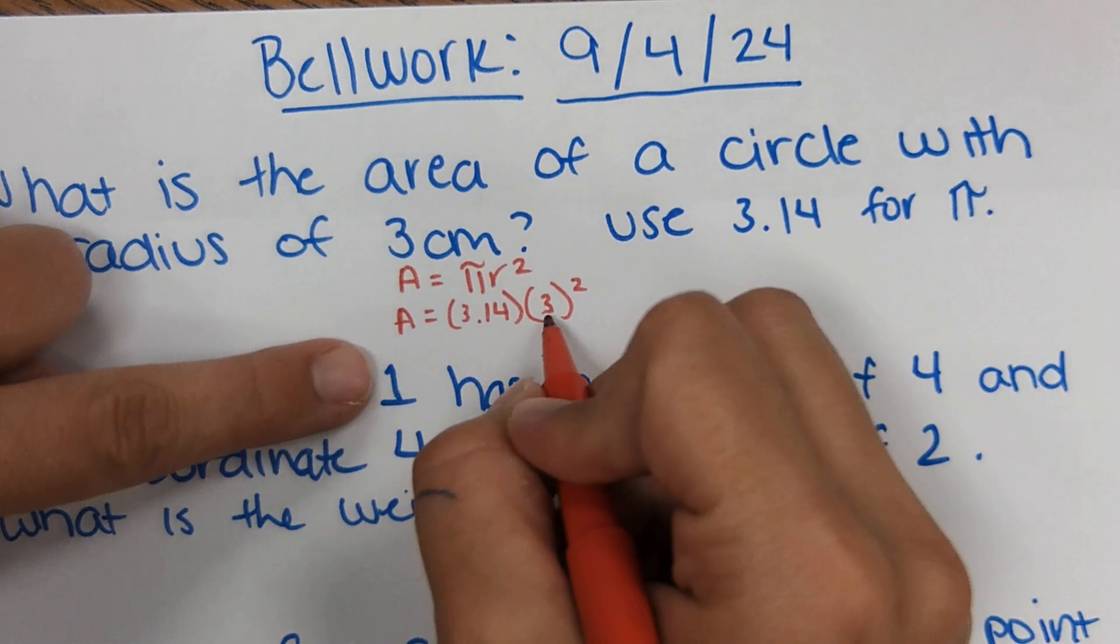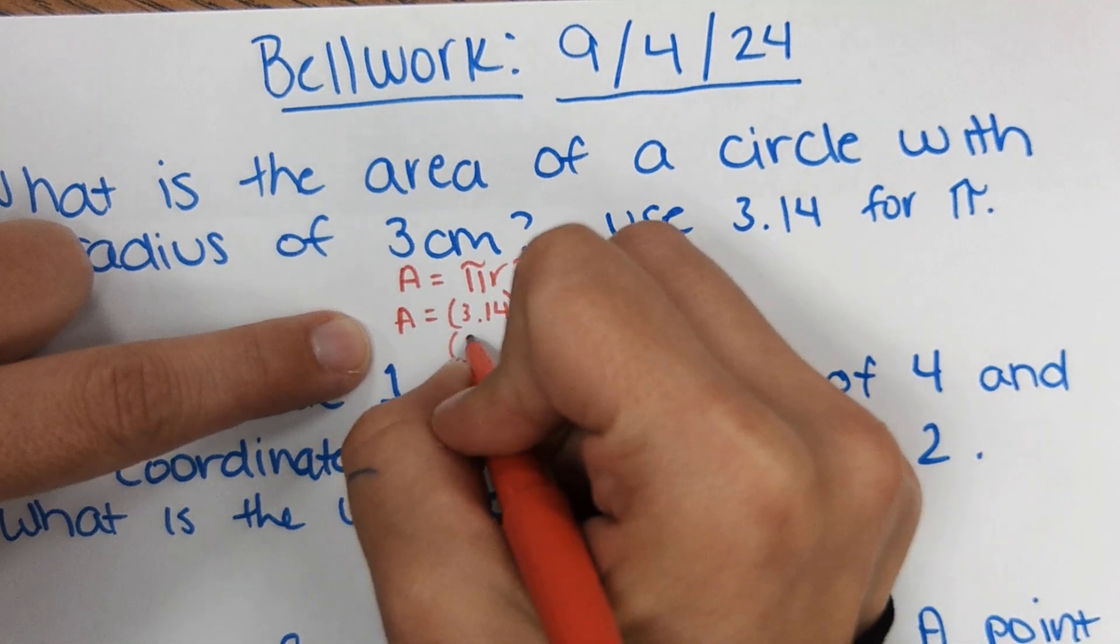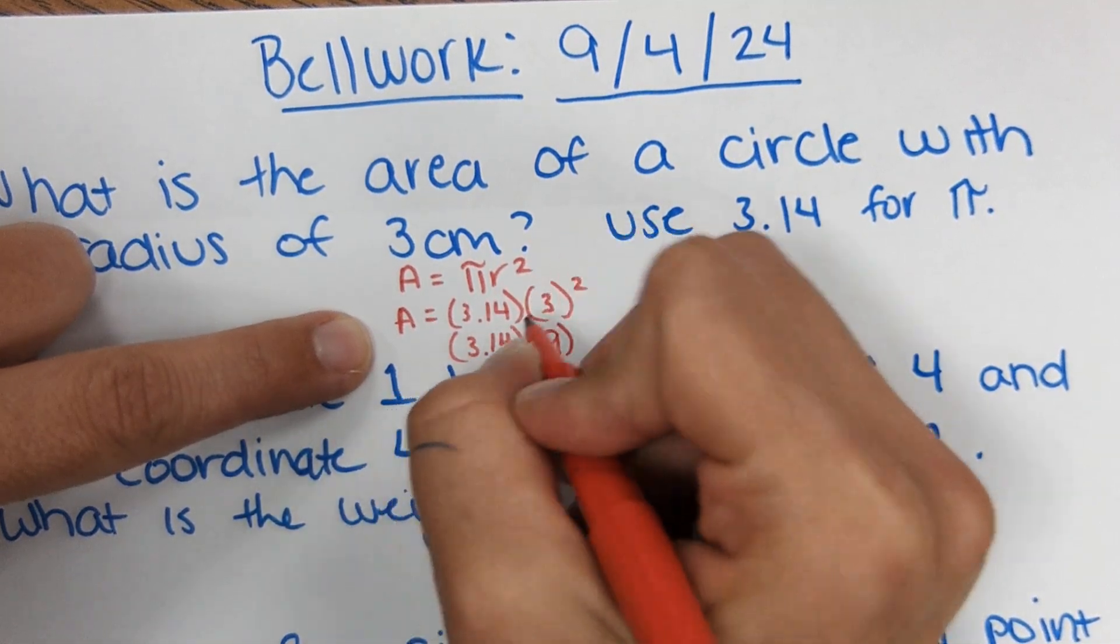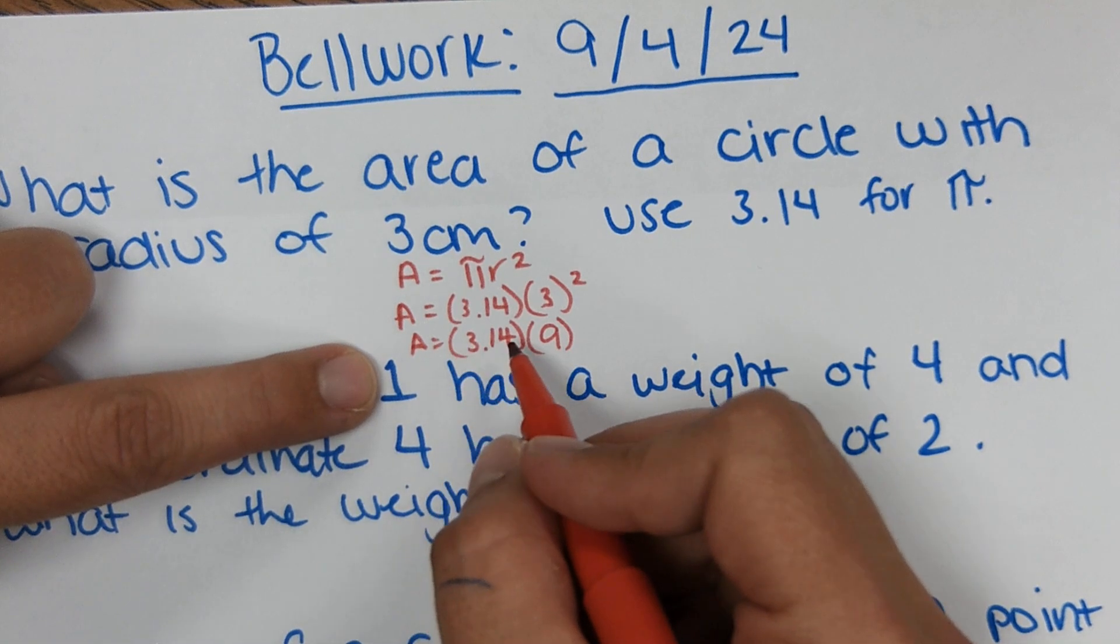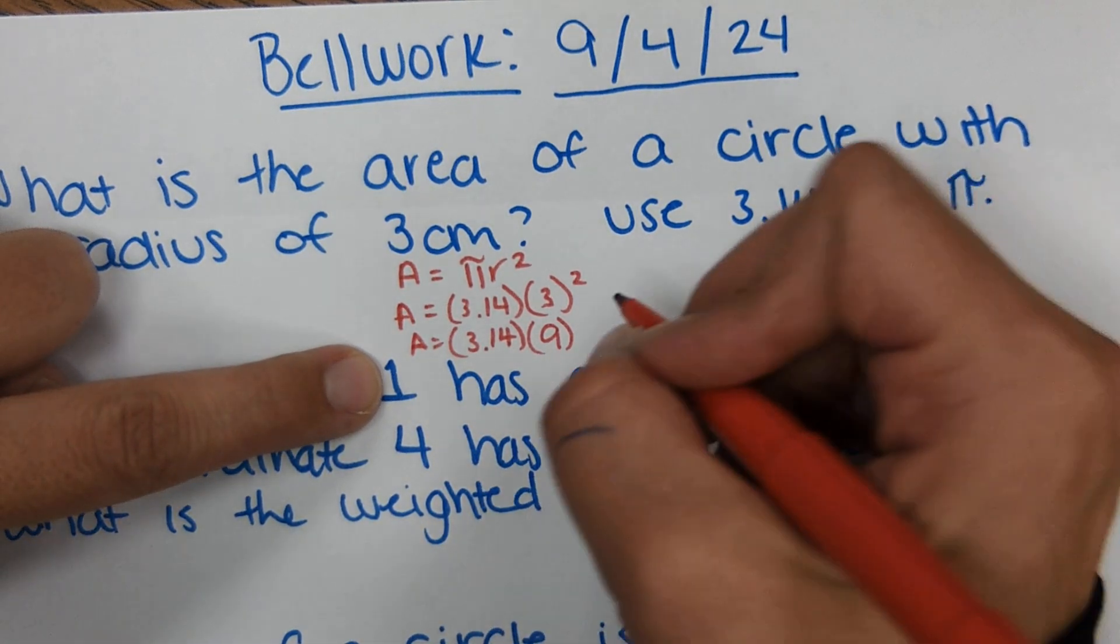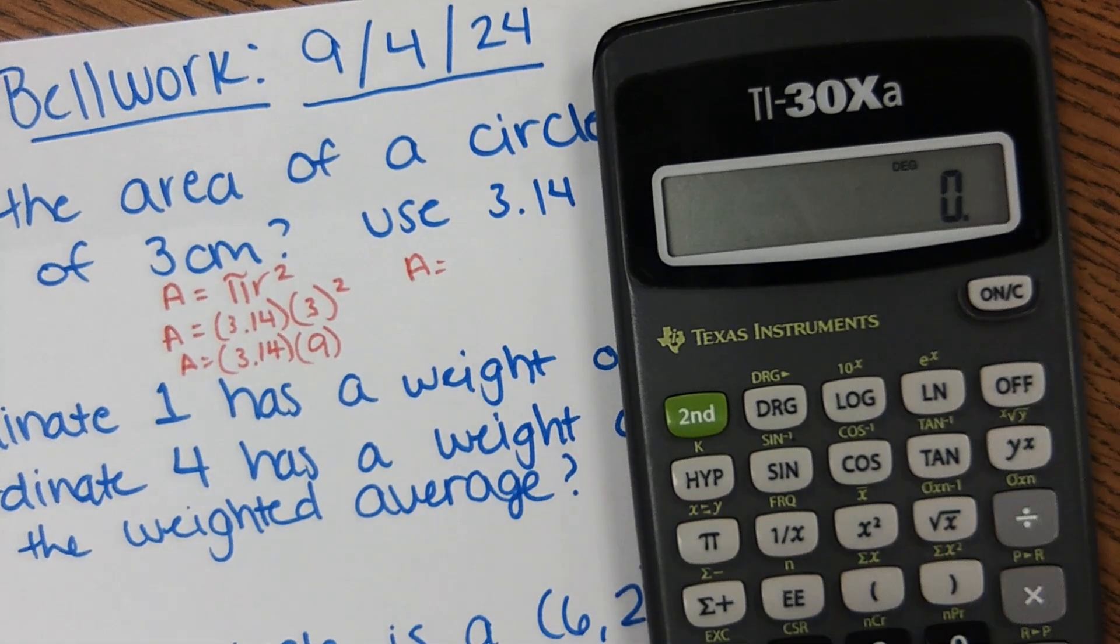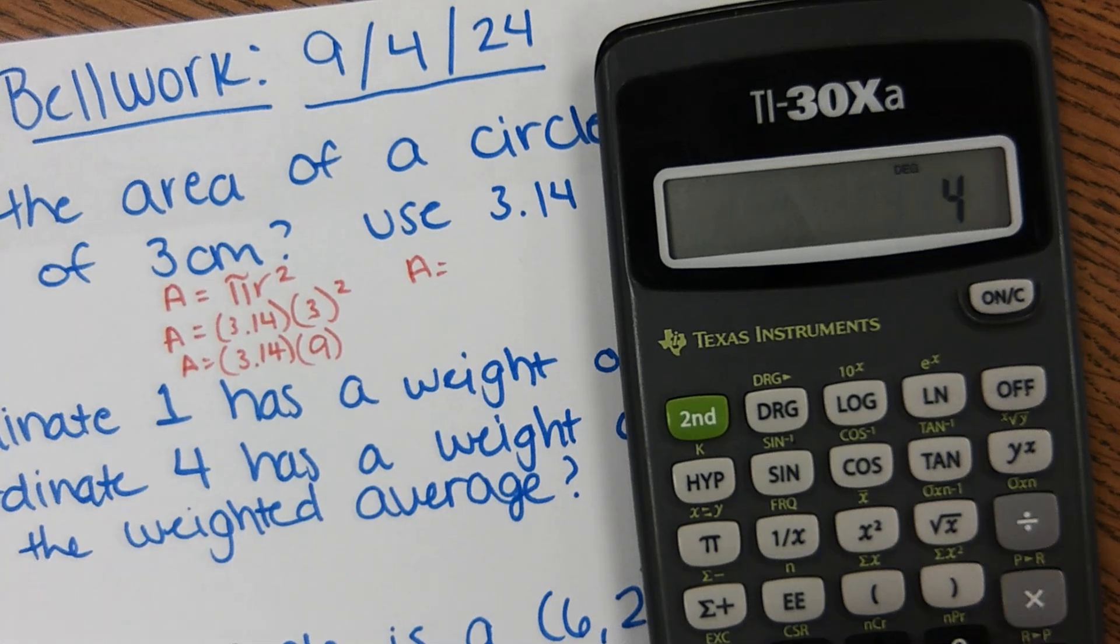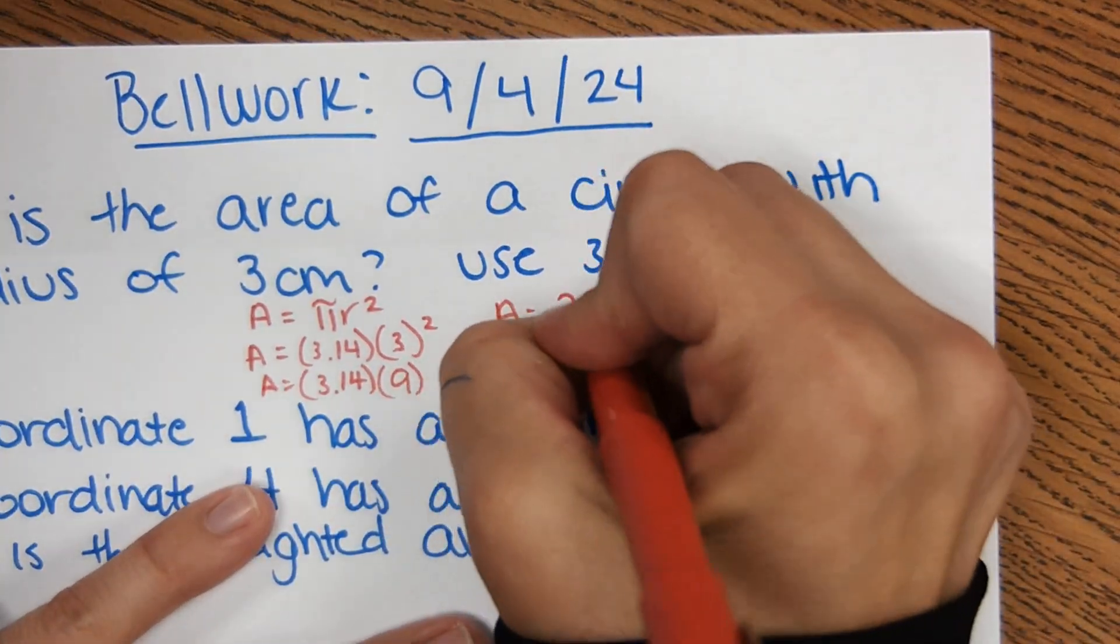Okay, and then from there, you need to follow order of operations. So three squared, three times three would be nine. So I bring that down. And then the last step is to just multiply these two numbers. So in a calculator, I would just do 3.14 times nine. So that would just be 3.14 times nine. And it comes out to 28.26. So the area of this circle is 28.26.